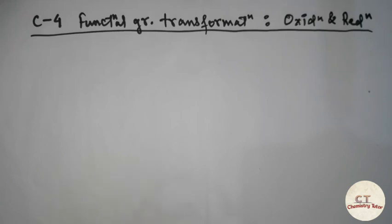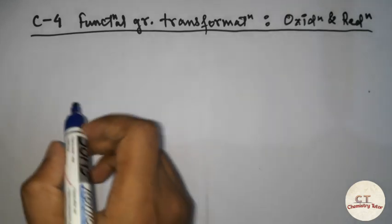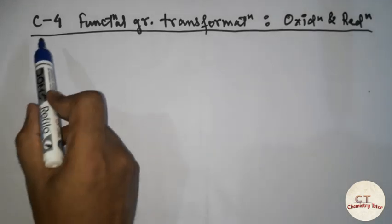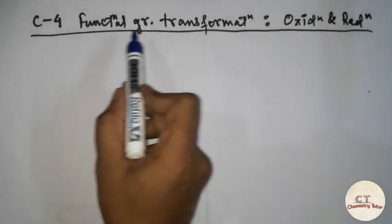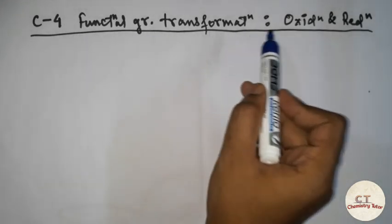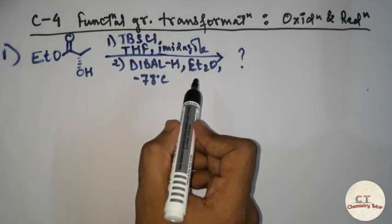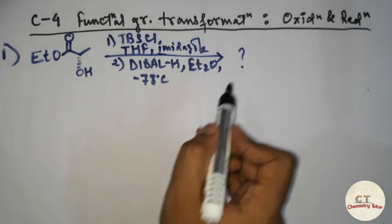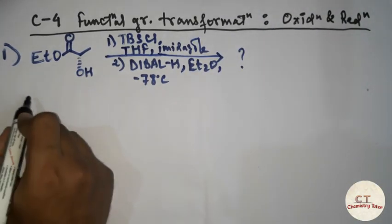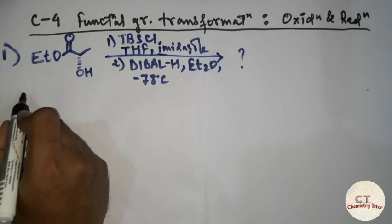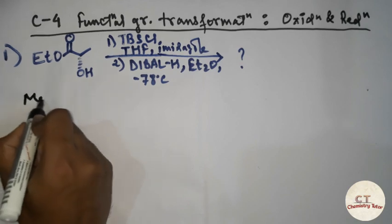Hello everyone, welcome to my channel. Today I'll be discussing certain important problems from JFL and Nan's book. Let's begin with Chapter 4: Functional Group Transformation — Oxidation and Reduction. Let's see this problem; we need to find the product, so we will do a step-by-step mechanism.